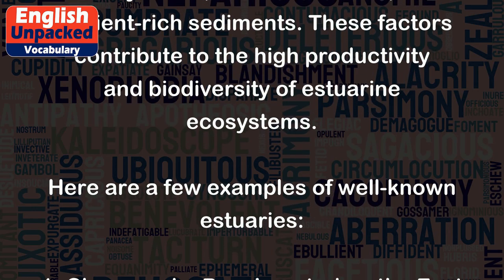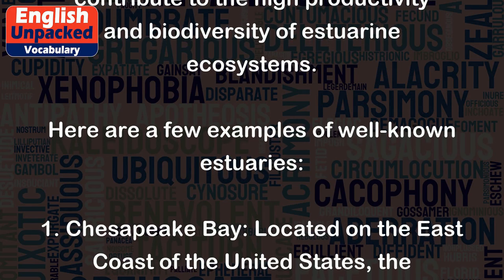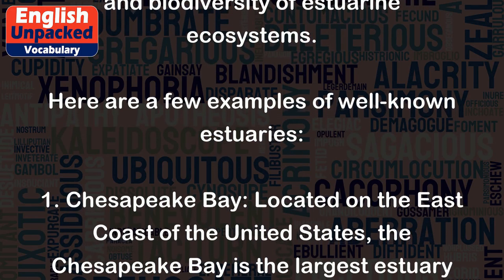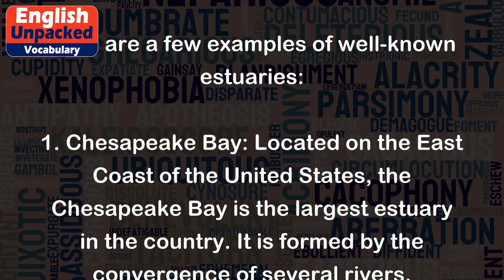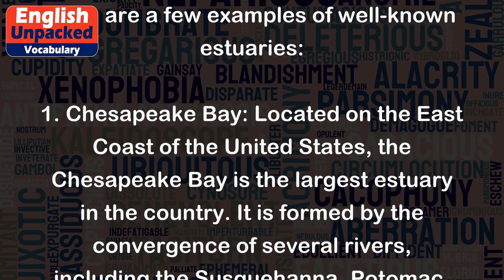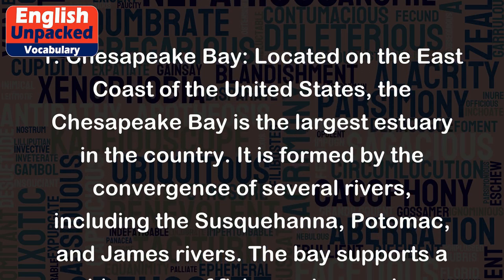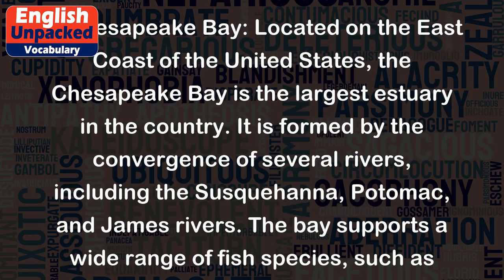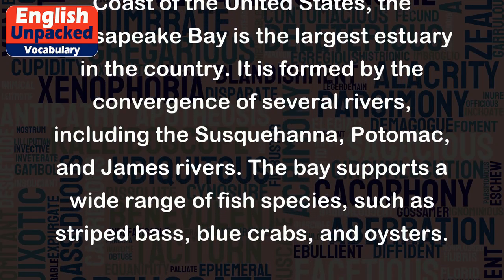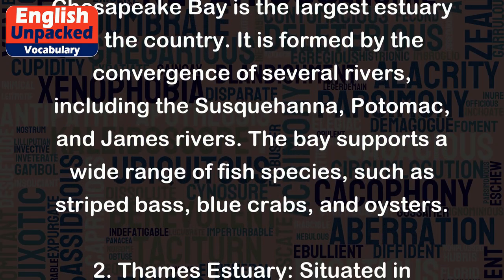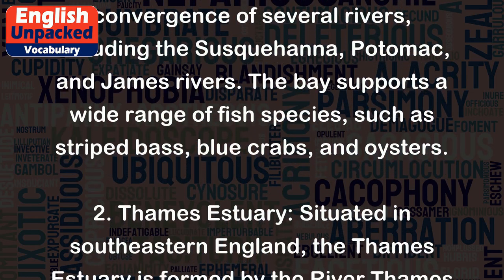Here are a few examples of well-known estuaries. 1. Chesapeake Bay — located on the east coast of the United States, the Chesapeake Bay is the largest estuary in the country. It is formed by the convergence of several rivers, including the Susquehanna, Potomac, and James rivers. The bay supports a wide range of fish species, such as striped bass, blue crabs, and oysters.